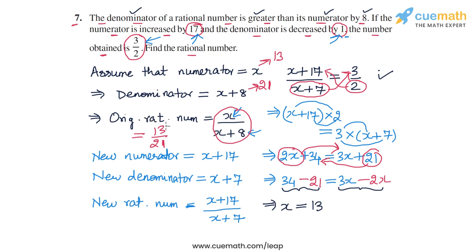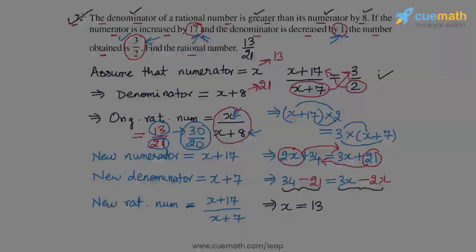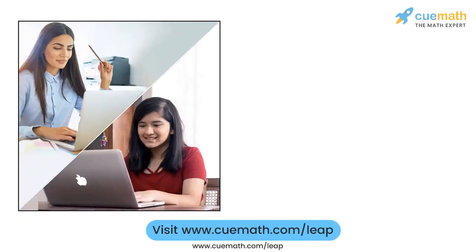We can verify this answer: if we increase 13 by 17, we get 30; if we decrease the denominator 21 by 1, we get 20. So we get 30 by 20, which equals 3 by 2 in its lowest form. The rational number we wanted to find is 13 by 21, and this completes question 7.